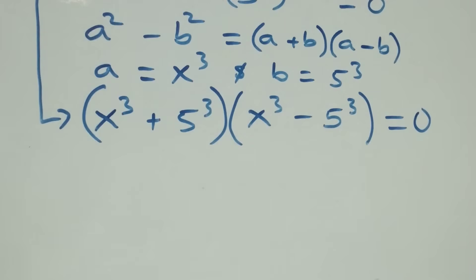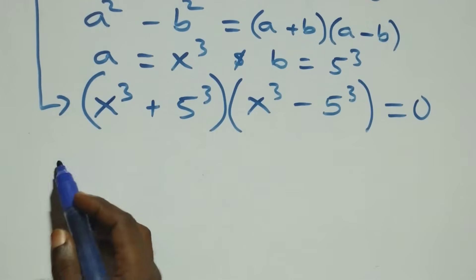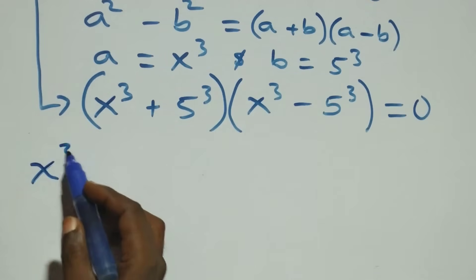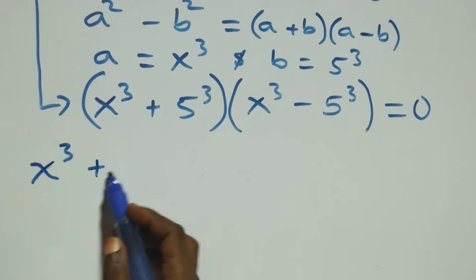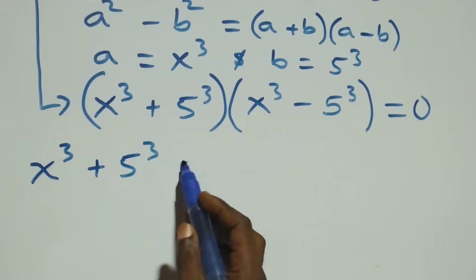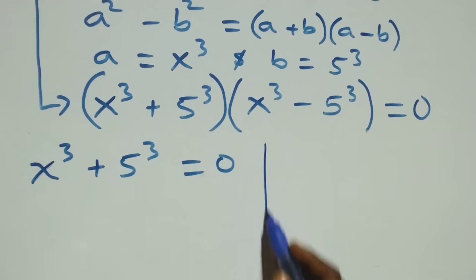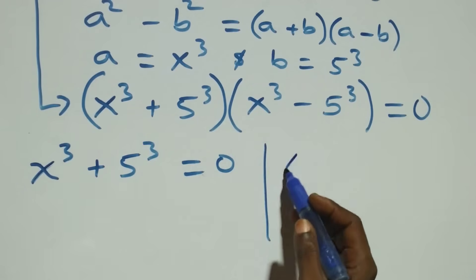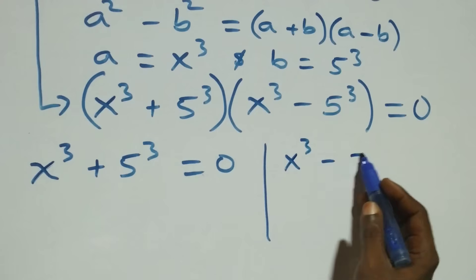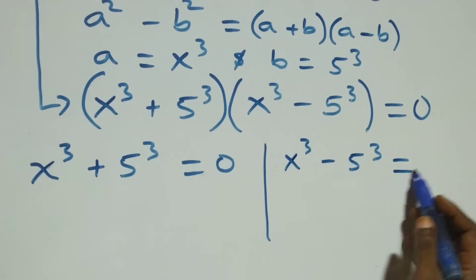From here we have x raised to power 3 plus 5 raised to power 3 equals to 0, or we have x raised to power 3 minus 5 raised to power 3 equals to 0.